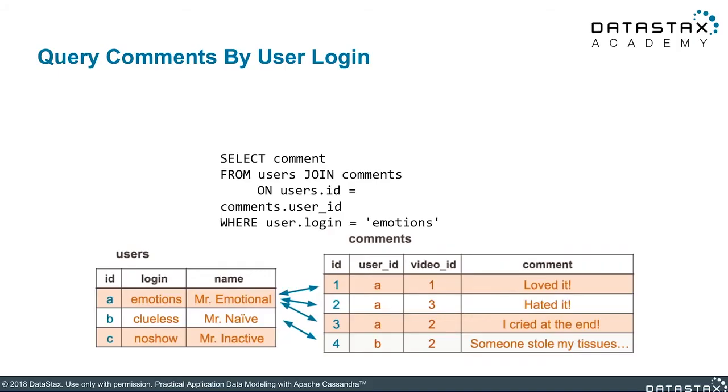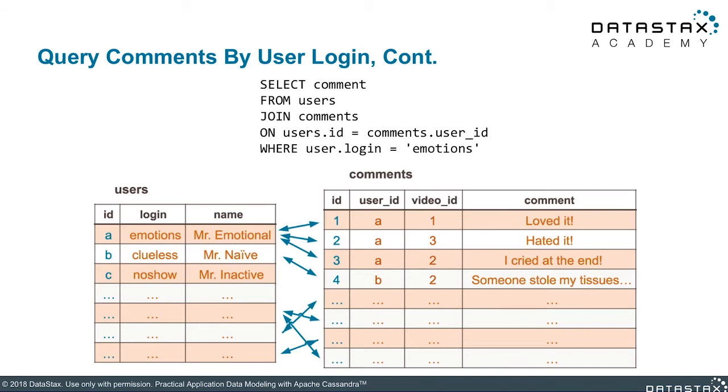What about something a little more complicated? Maybe something like logins — we're looking for particular comments by a user. Here's this user 'emotions', and we want to find out every comment that user had put into the system. Again, another join. It's just a few here, but what if it's a lot more? Well, there's the problem with relational database modeling: eventually you're going to run into the situation if you're not careful. You don't know when it's going to happen, but eventually you're going to see that there are too many records in the join, and it'll start slowing down your queries a lot.